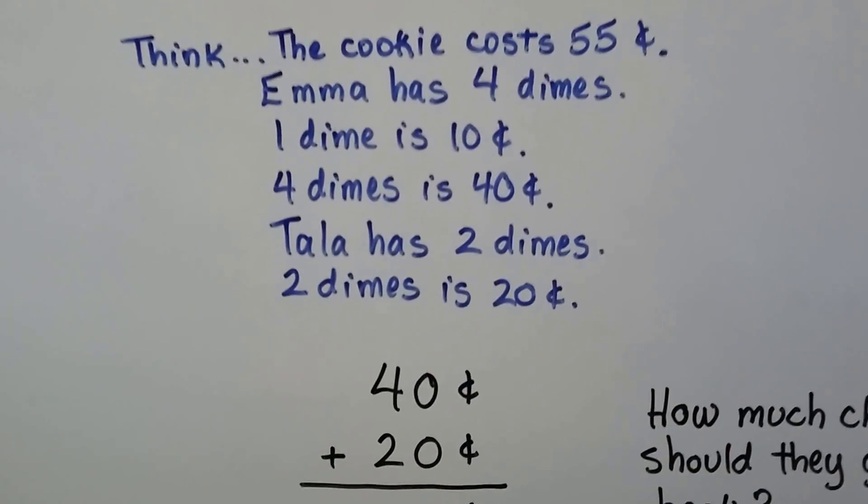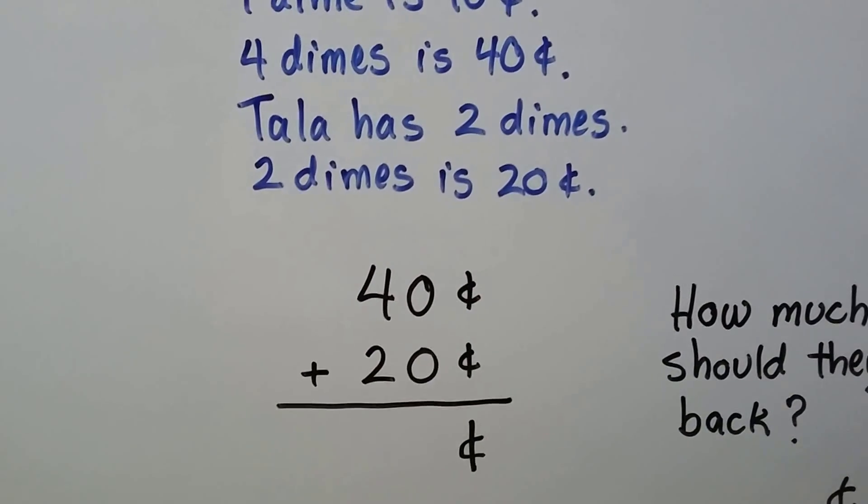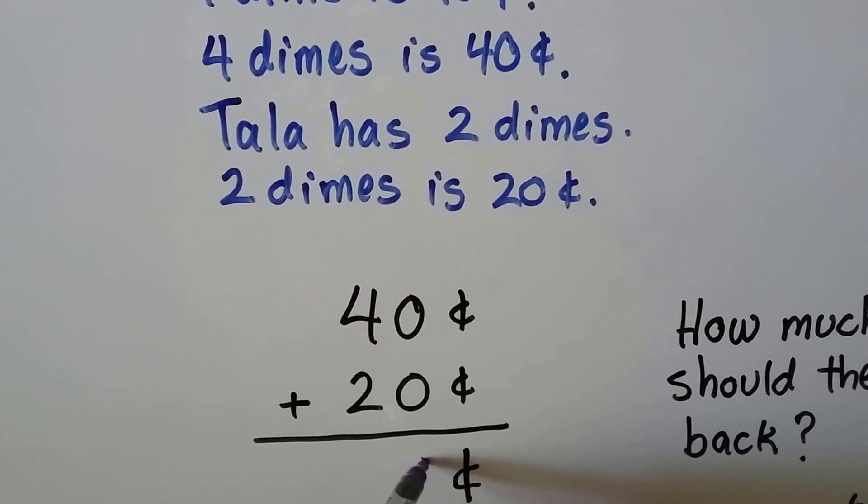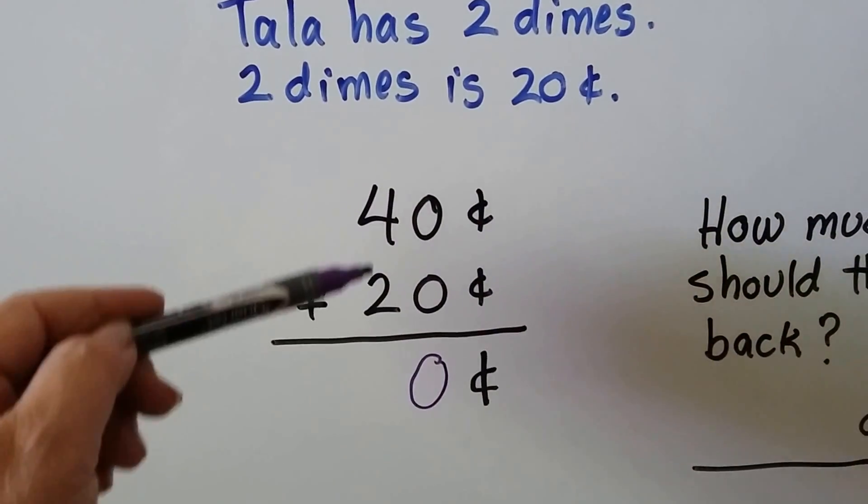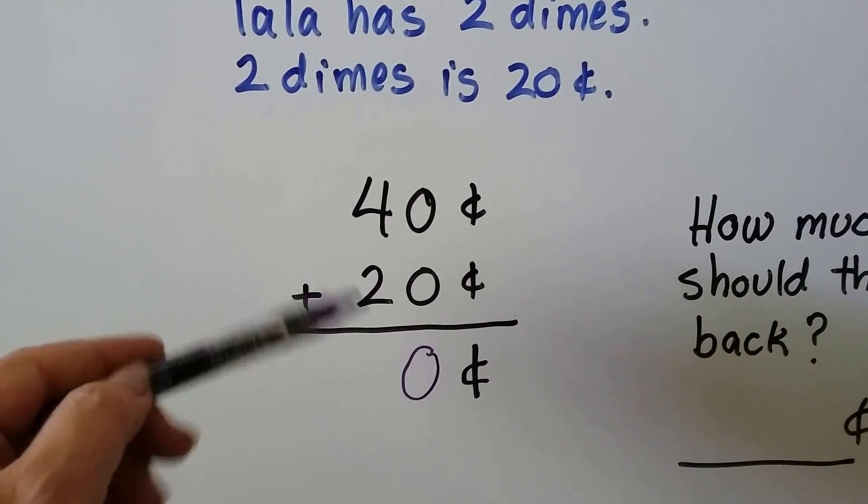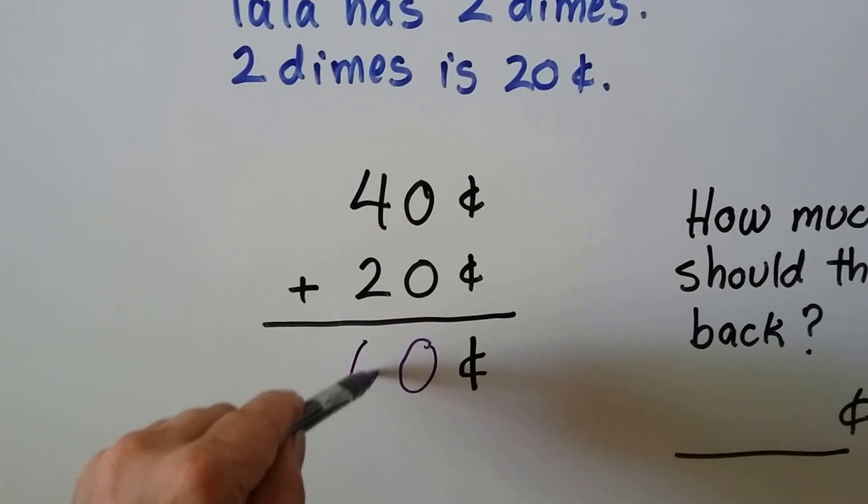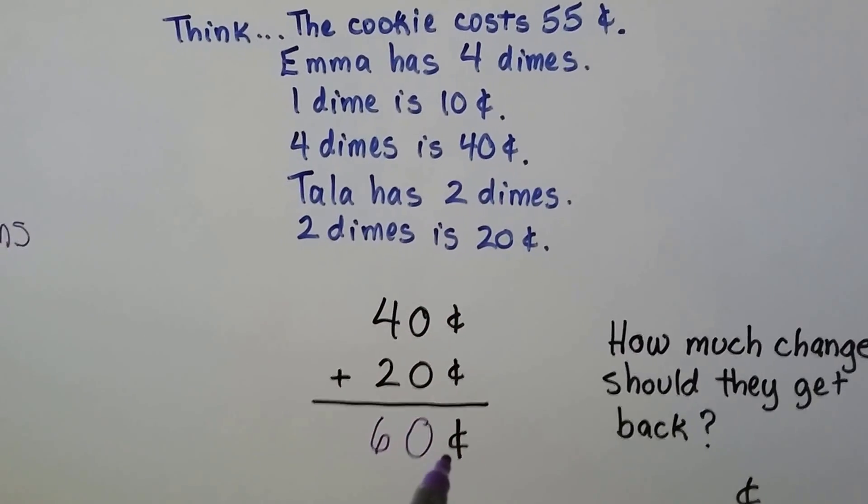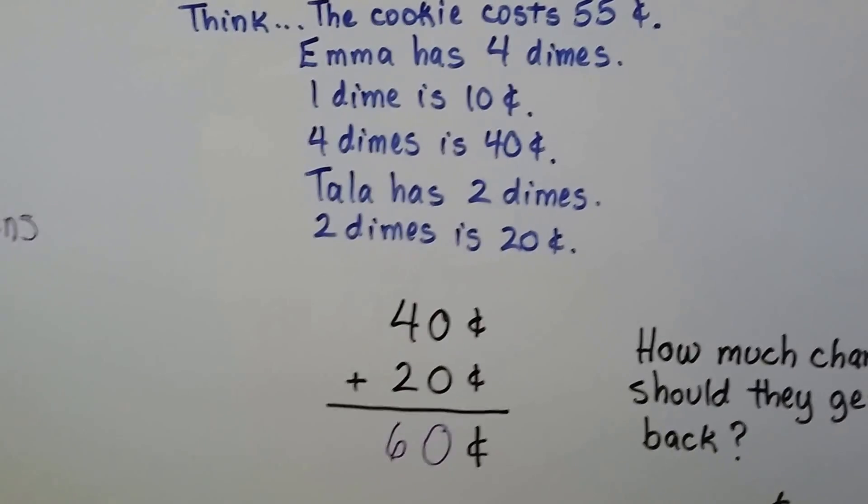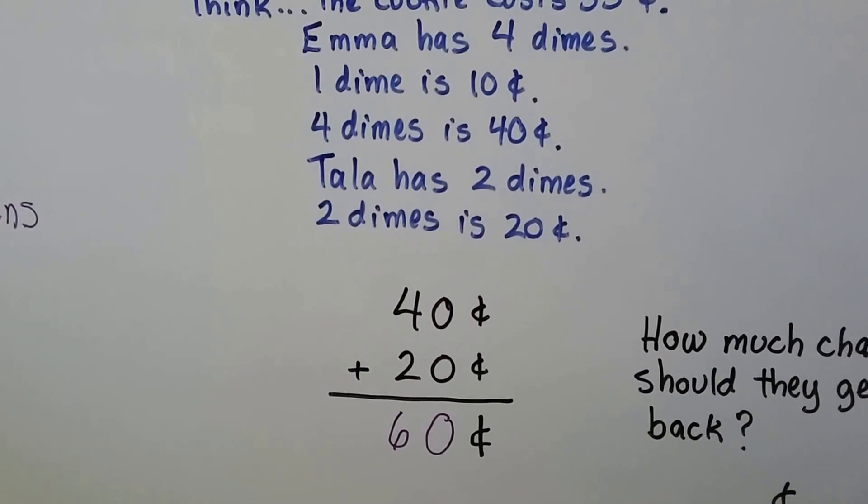One dime is 10 cents, so four dimes is 40 cents, right? If she has four tens, then she's got 40. And Tala has two dimes and two dimes is 20 cents because it's two tens. See? We add them together. 40 cents plus 20 cents. There's no ones, so we put a zero there. We add the tens. Four plus two. Four, five, six. We've got 60 cents. Now the cookie costs 55 cents. So do they have enough money? Yeah, they do. In fact, they have extra, don't they?